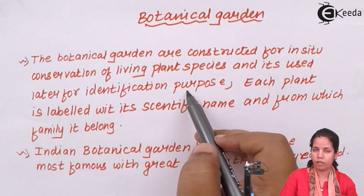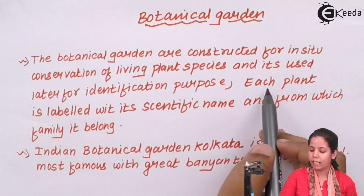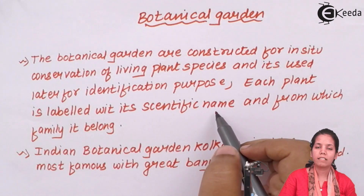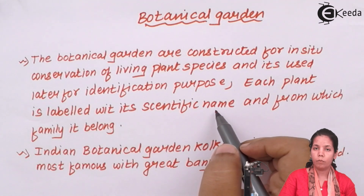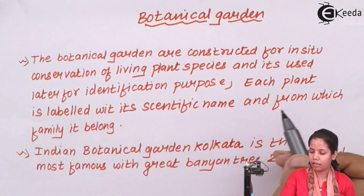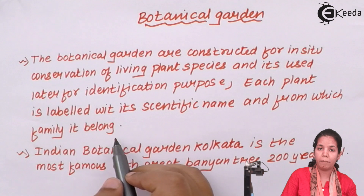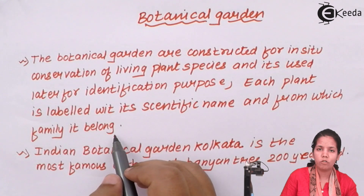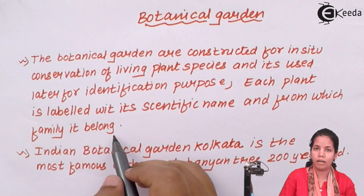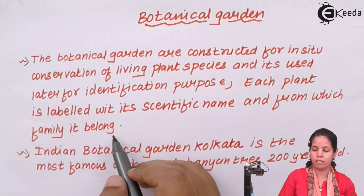According to the Red Data Book, each plant is labelled with its scientific name — which includes the genus name and species name — given by binomial nomenclature by Linnaeus. This is very important for plants in botanical gardens. Labels also indicate which family the plant belongs to, whether it is angiosperm, gymnosperm, pteridophyta, or bryophyta, for reference purposes and smooth studies.